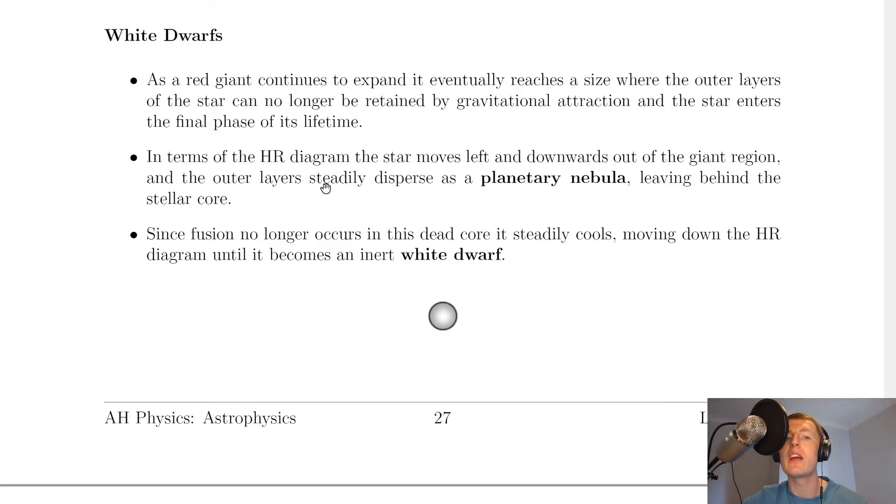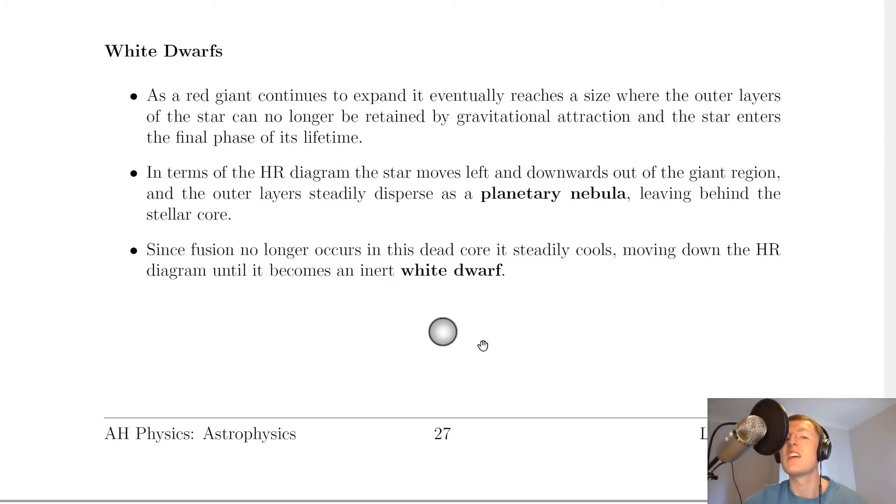The outer layers steadily disperse as a planetary nebula, leaving behind a stellar core. Since fusion no longer occurs in this dead core, it steadily cools, moving down the HR diagram until it becomes an inert white dwarf. At this point, we say that the star is essentially dead and it will just continue to cool down over time.